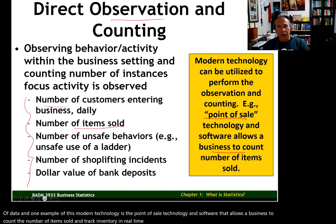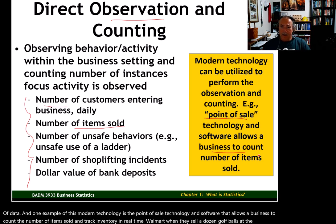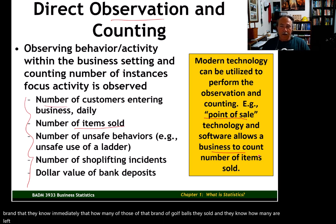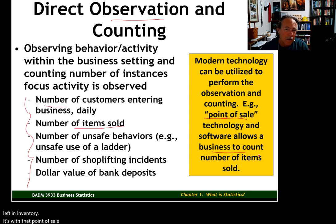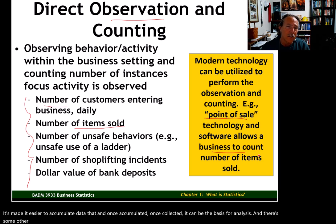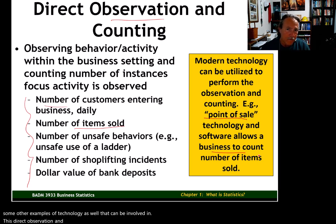For example, when Walmart sells a dozen golf balls of a particular brand, they immediately know how many of that brand they've sold and how many are left in inventory. That real-time point-of-sale technology makes it easier to accumulate data that, once collected, can be the basis for analysis. There are other technology examples involved in this direct observation and counting method as well.